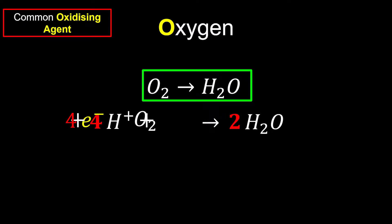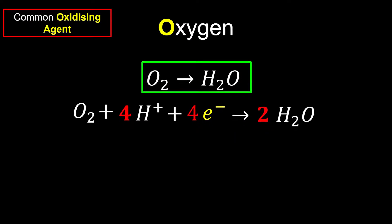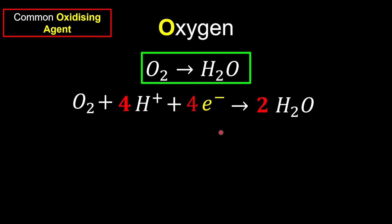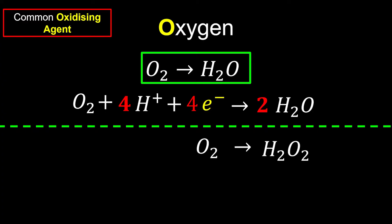Then we rearrange it to look nicer and we are done for this case. It tells us that oxygen can eventually take an alternative pathway to become water, and we have a byproduct. The byproduct is what we call hydrogen peroxide, which is one of the antiseptics. This is our general idea and we're going to balance it off.